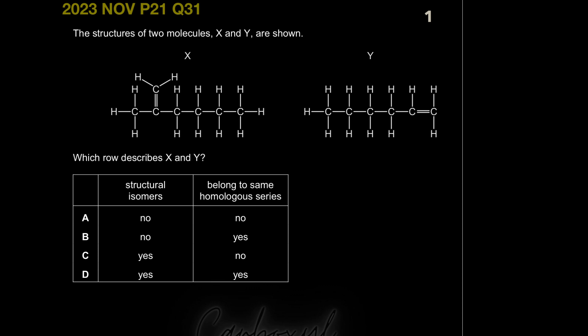The question asks which row describes X and Y — are they structural isomers, and do they belong to the same homologous series? Absolutely, they both belong to the same homologous series, so options A and C are wrong. For structural isomers, they must have the same molecular formula but a different structural formula. One molecule is unbranched and the other is branched, so they do have different structures — but we need to check the molecular formulas.